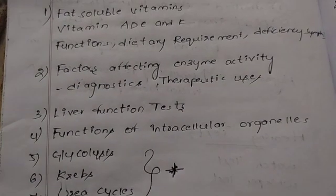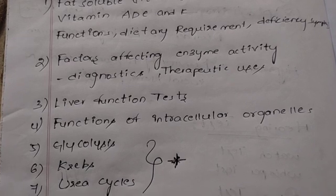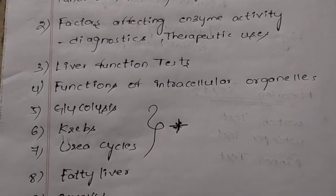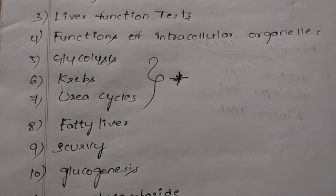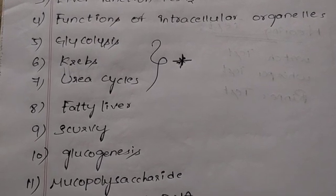Functions of intracellular organelles. Glycolysis, Krebs cycle, and urea cycle - these three cycles, any cycle is compulsory. Fatty liver, scurvy, and gluconeogenesis.